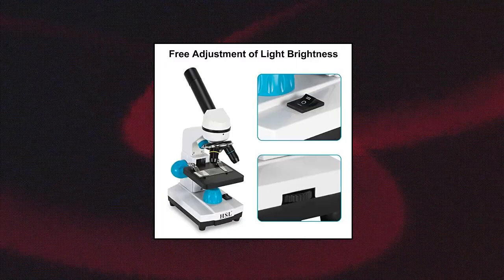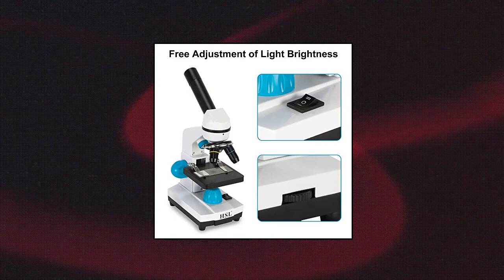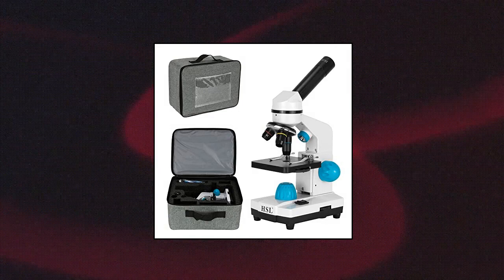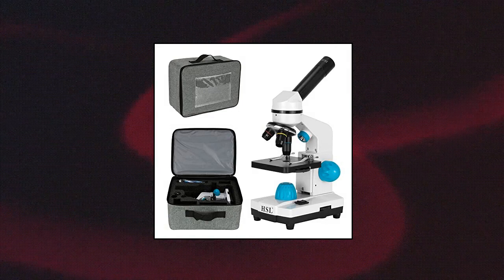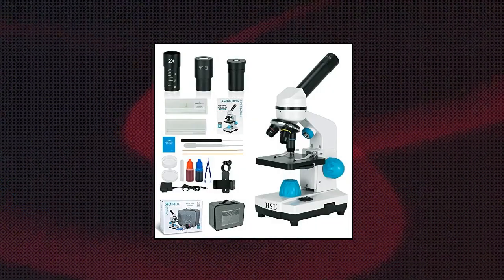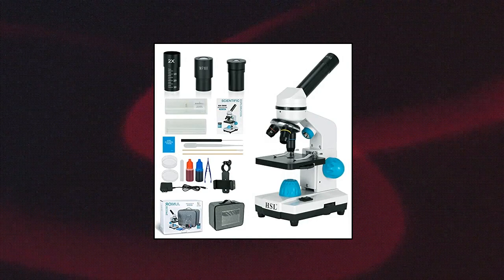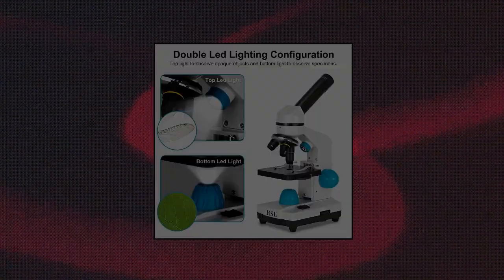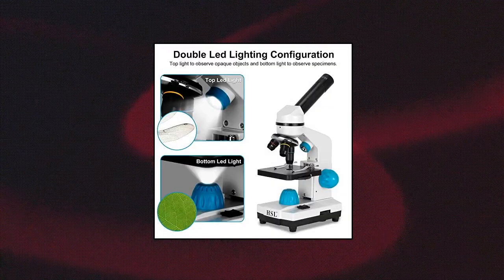HSL Compound Monocular Microscope for Adult Students 40x-2000x Magnification. Multiple magnification microscope set containing two eyepieces with WF-25 and WF-10, three objectives (4x, 10x, 40x), 1 Barlow Lens 2x.